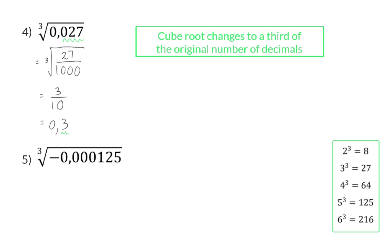In example 5, we now have the cube root of a negative value, and you should know by now that the cube root of a minus will be negative again. The square root of a negative value will be non-real. Here we need to get the cube root of 125, which is 5. Next, we have a look at the original number of decimals, which is 6, and if we take a third of that, we only need two decimals in our answer, meaning we need to add a decimal and our final answer will be -0.05.